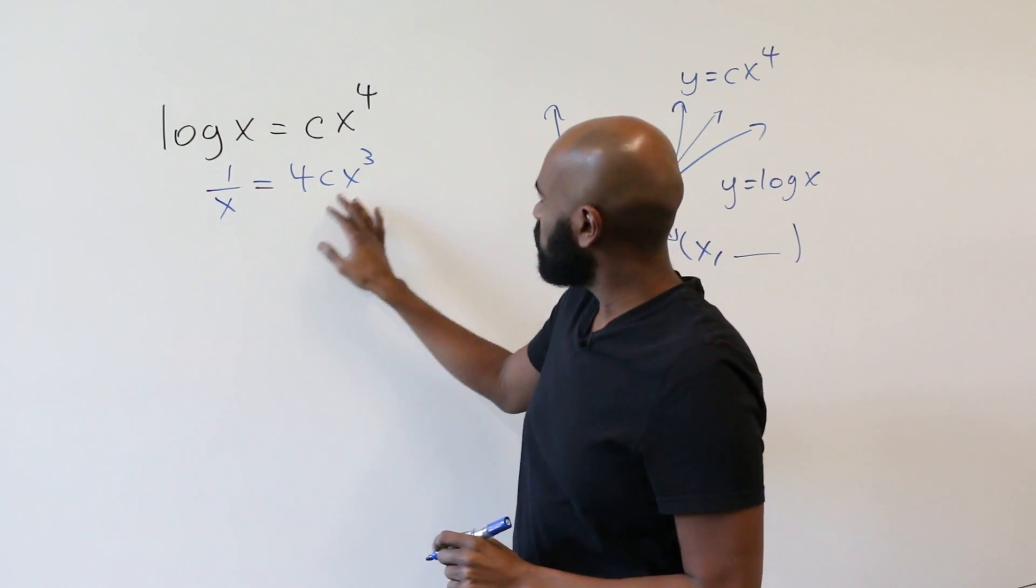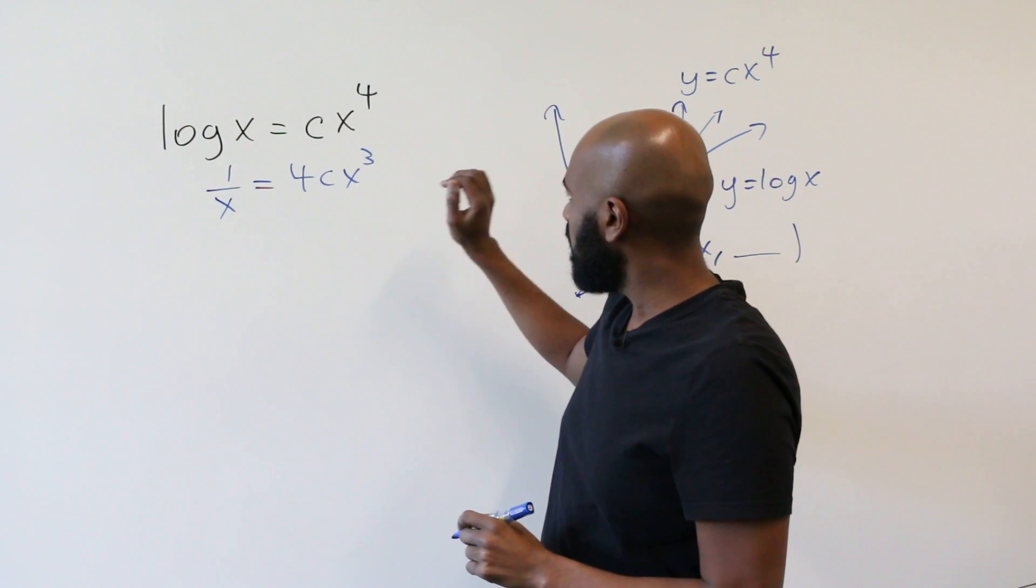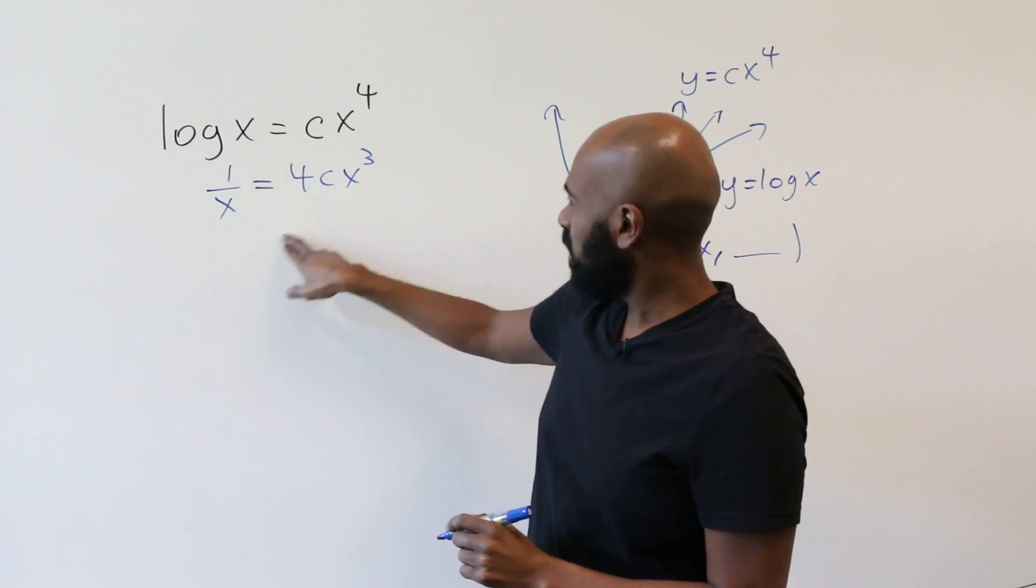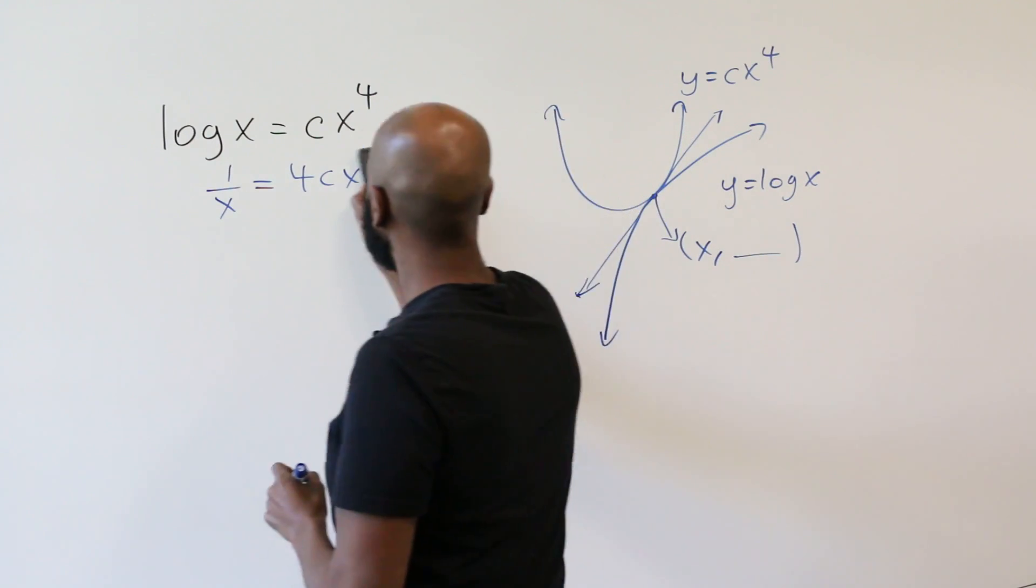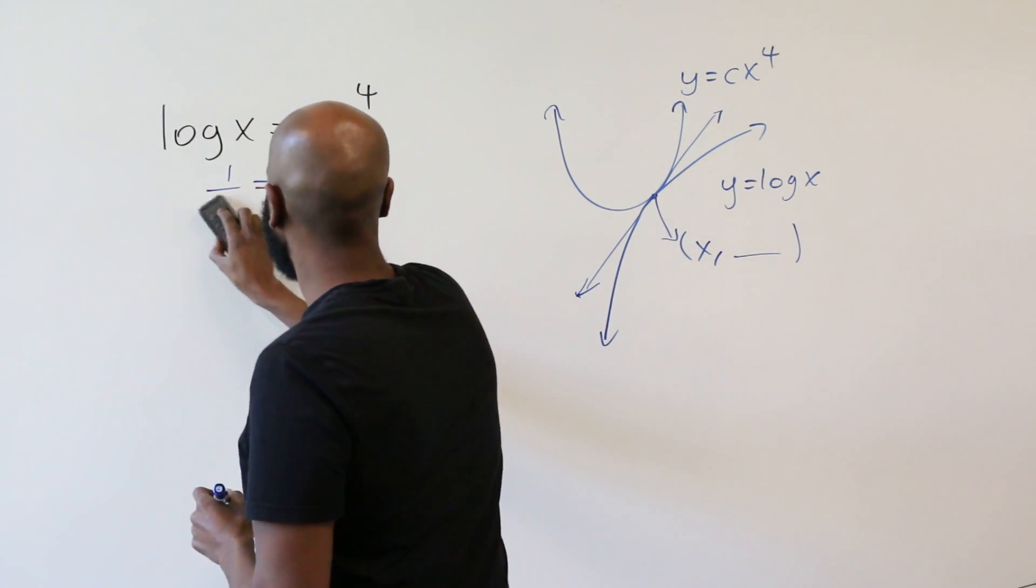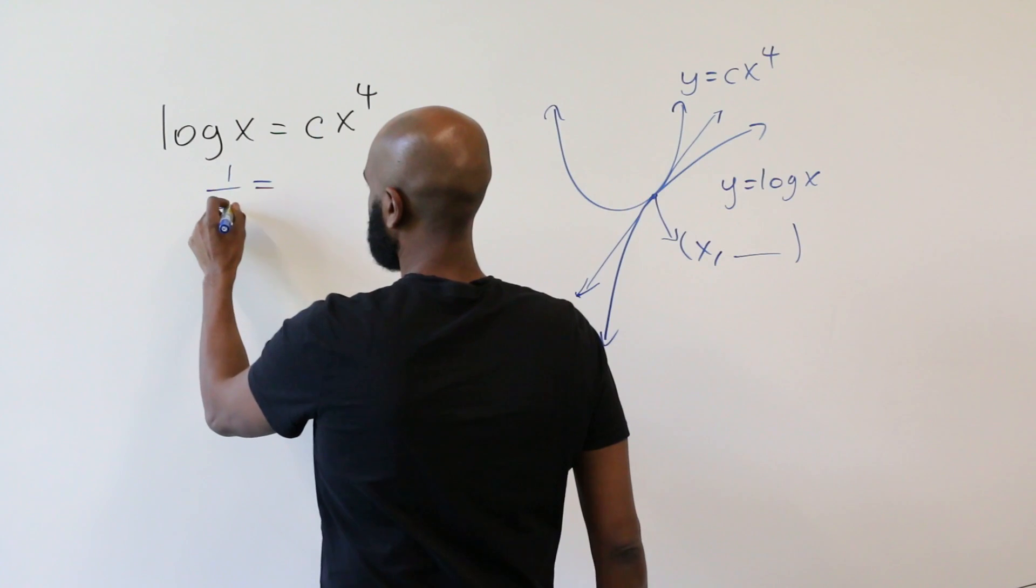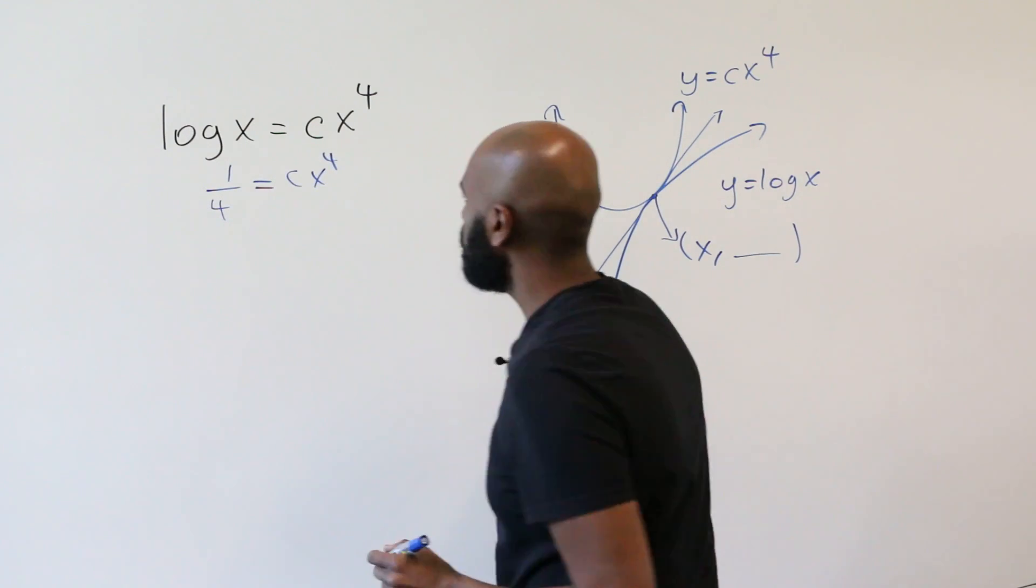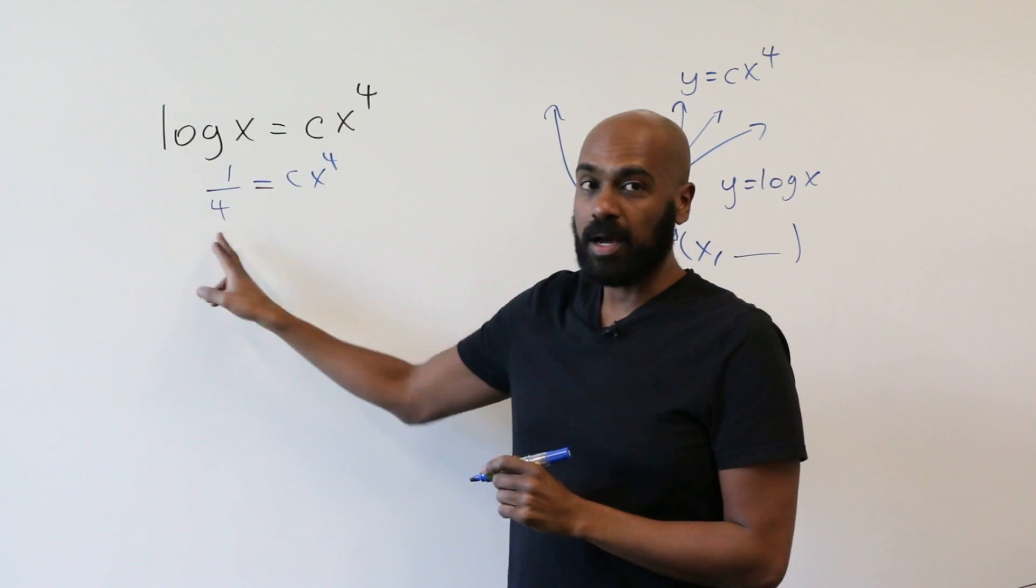So I'll rearrange this so it looks a little bit more like this right hand side. We can move this x here to get c x to the fourth and move the 4 there. So if we do that, we'll get a fourth is c x to the fourth. And now we're happy because we have that log x is a fourth.